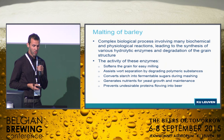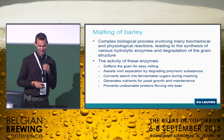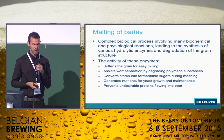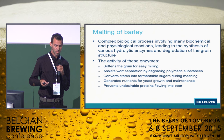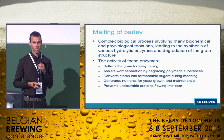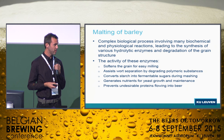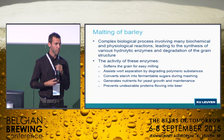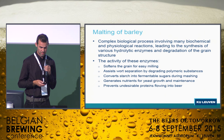Going back to malt — what is malting, or why are we doing this? Guido gave a very nice introduction to my talk. So why are we malting? Actually we want to create enzymes — hydrolytic enzymes and degradation of the grain structure. These enzymes are important for malt quality. It softens the grain, assists separation for better filtration. The starch can be converted into fermentable sugars during mashing. Nutrients are generated for yeast to support yeast growth and maintenance, and we prevent undesirable proteins floating into the beer.